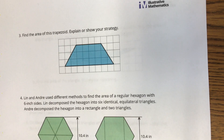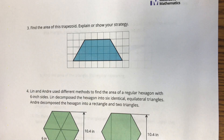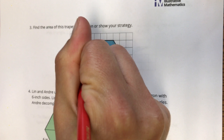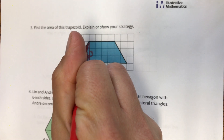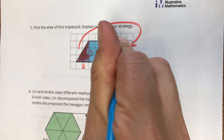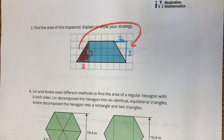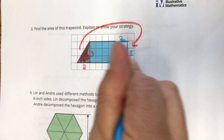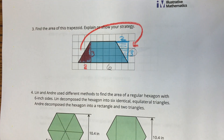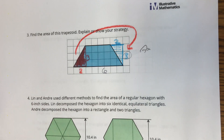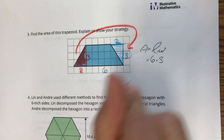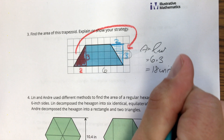Moving on to the next question: find the area of this trapezoid and explain or show your strategy. What if I take a triangle here? This triangle has a height of 3 and a base of 2. What if I move that out? I have a base of 2 and a height of 3, and all of a sudden I have a rectangle with a base of 6 and a height of 3. Area equals length times width, so 6 times 3 is 18 square units.